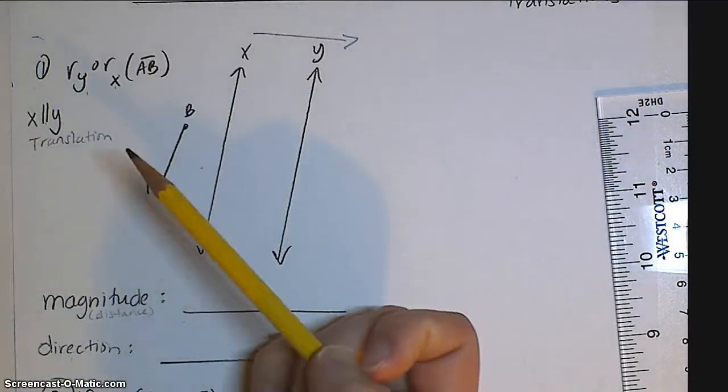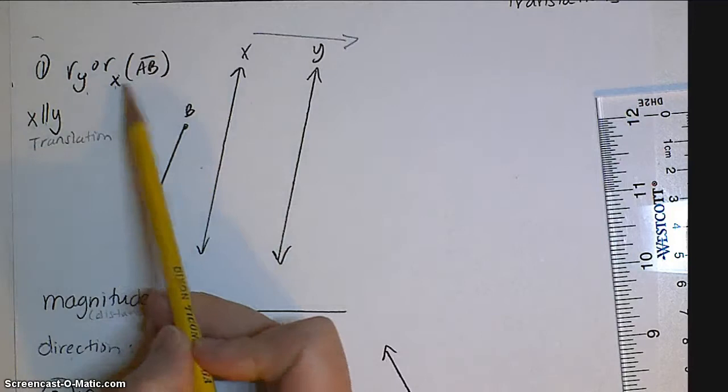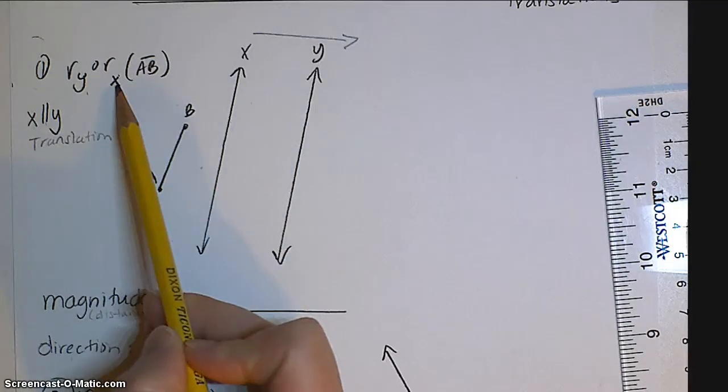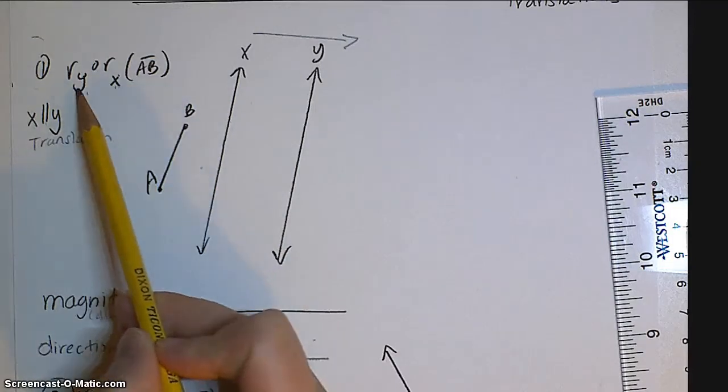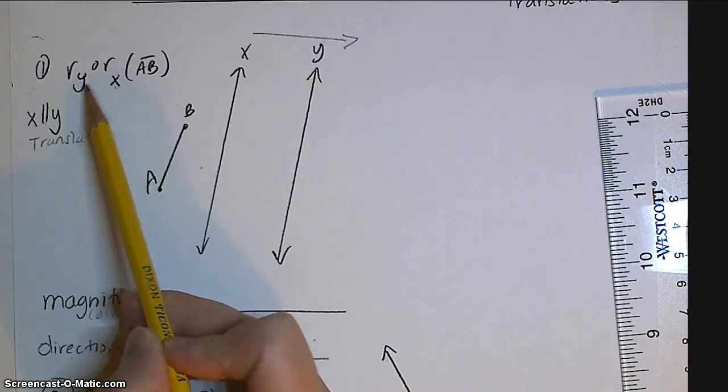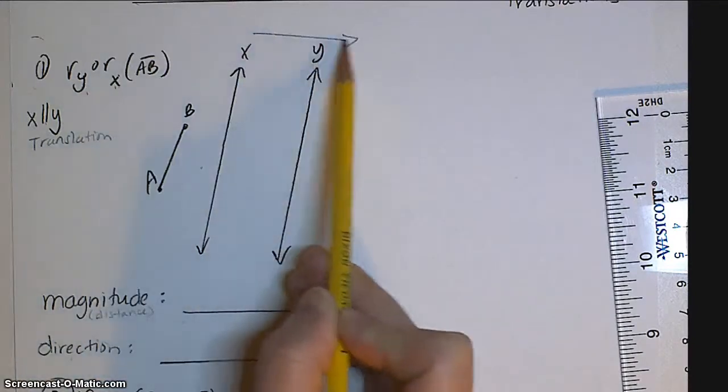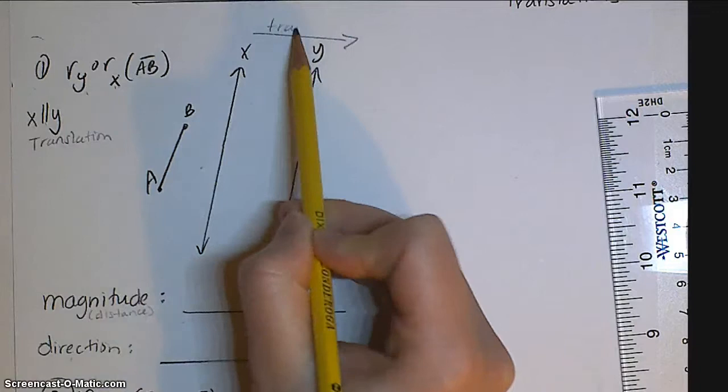Well, if we actually did the two reflections, this notation would tell us to reflect over x first and then to reflect over y. So I know that I'm traveling from x to y, so I'm going in this direction. This is the way I'm going to translate.